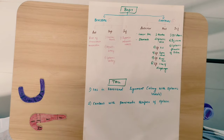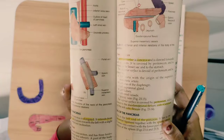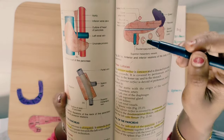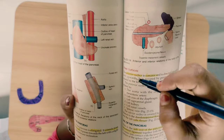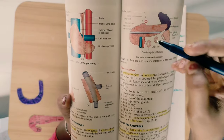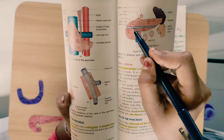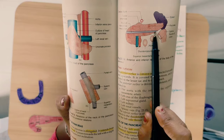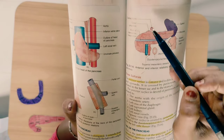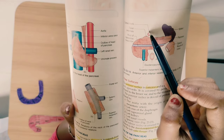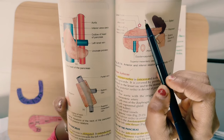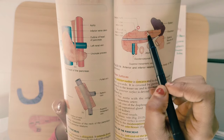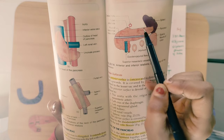Looking at the diagram, we can see the anterior and inferior relations of the body of the pancreas. The anterior border is in relation with the root of the transverse mesocolon. At the superior border, the relation is with the celiac trunk — which gives branches as the hepatic artery and splenic artery — coming in contact with the superior border of the pancreas.